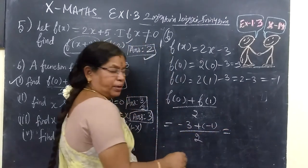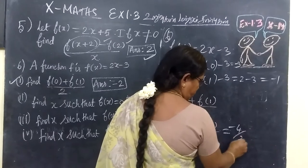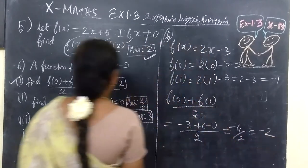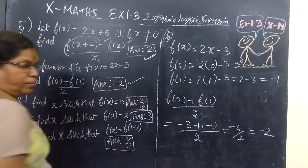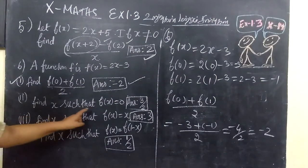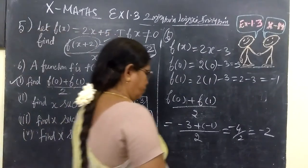Now find F of 0 plus F of 1, divided by 2. F of 0 is minus 3, F of 1 is minus 1. So minus 3 plus minus 1 equals minus 4, divided by 2. The answer is minus 2.